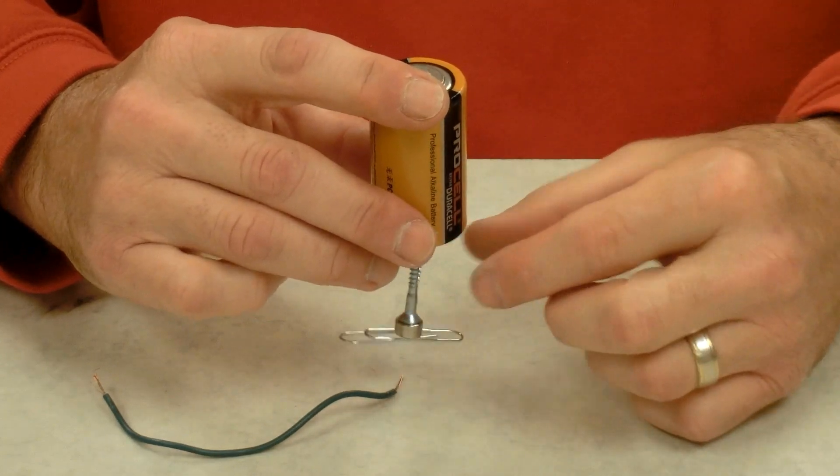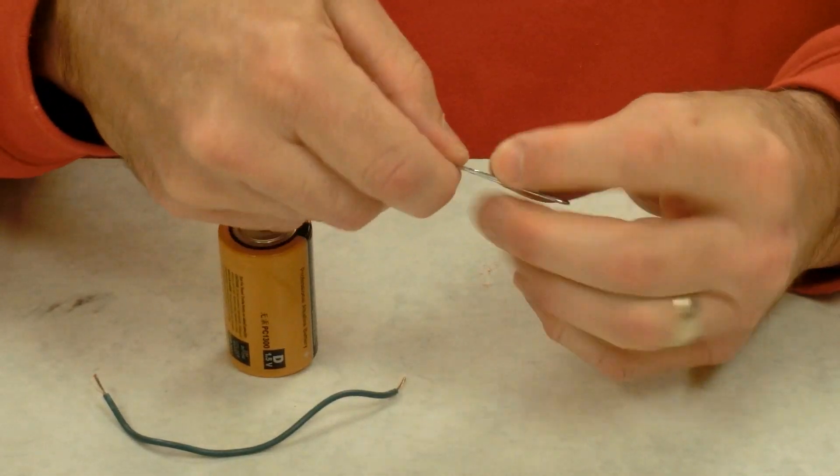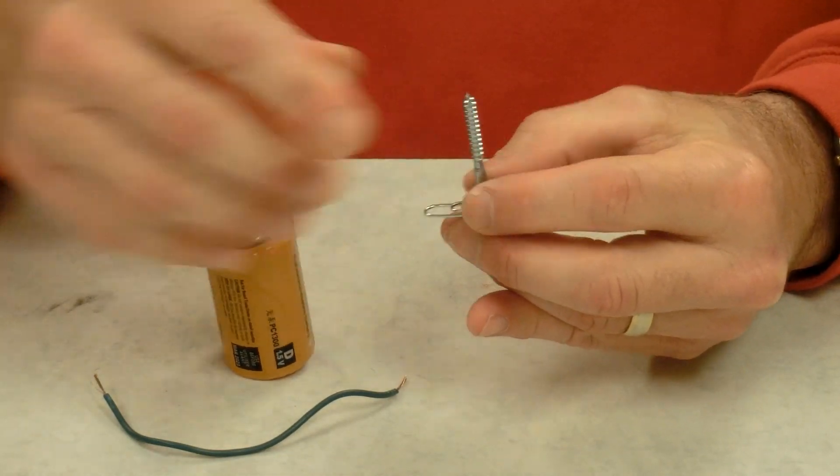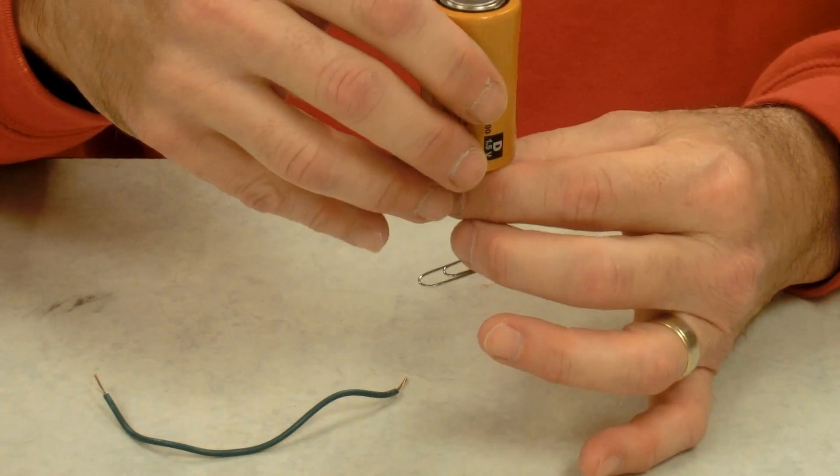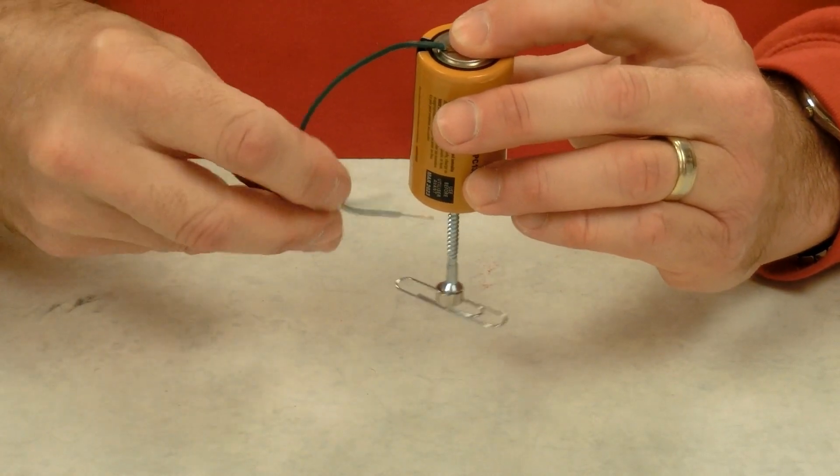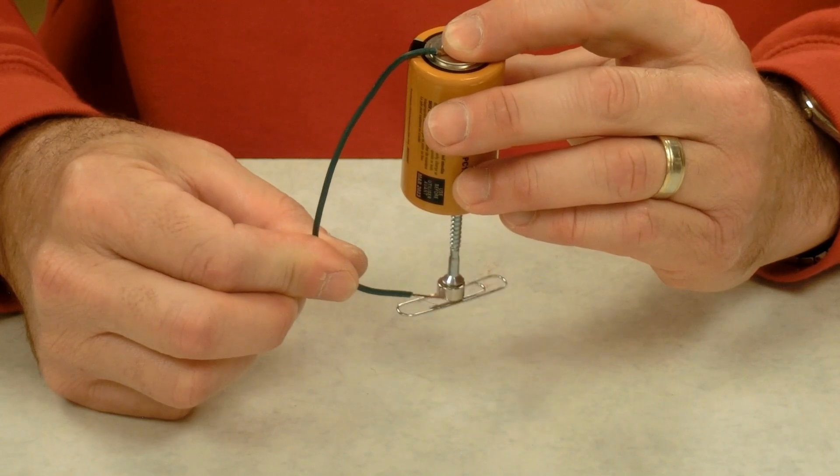Another way to reverse the direction of motion is to flip the magnet over. So if I turn my magnet over and connect it to the positive again, instead of spinning clockwise it should spin counterclockwise. And it is.